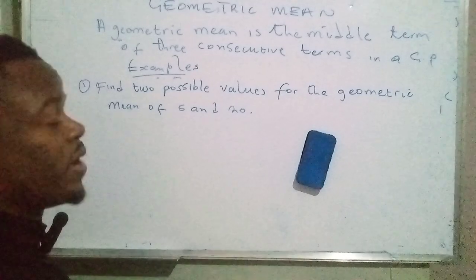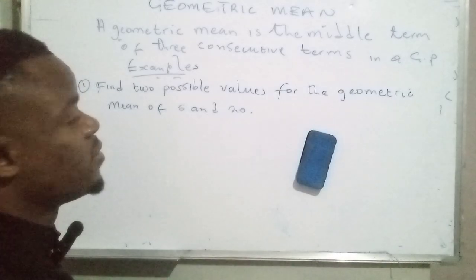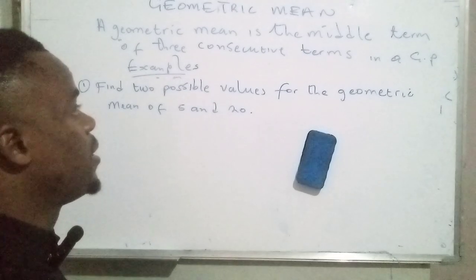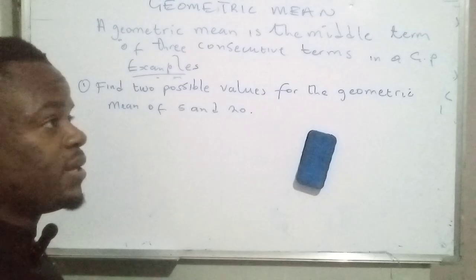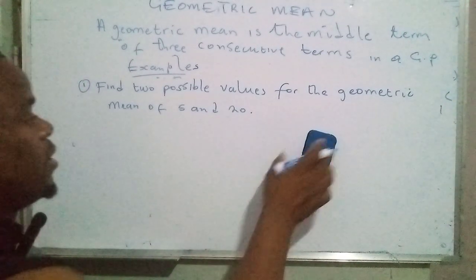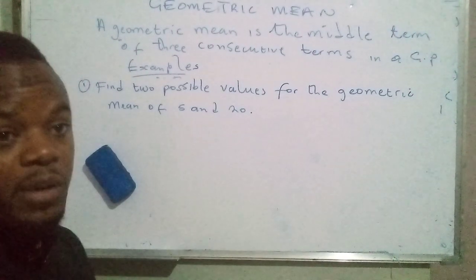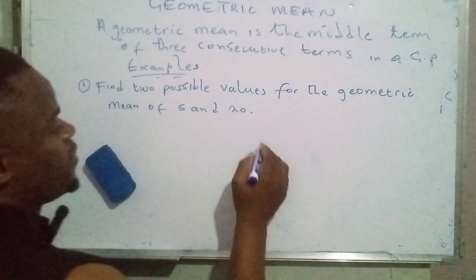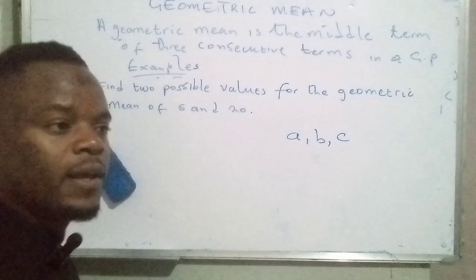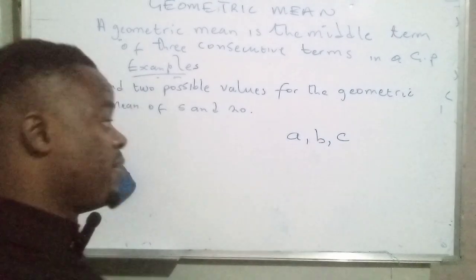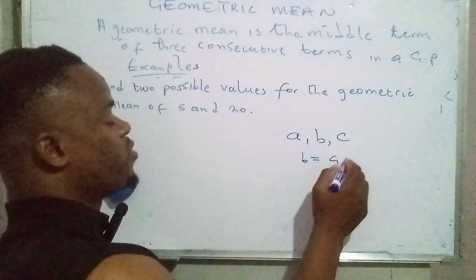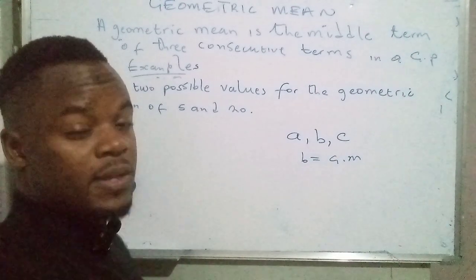In our lesson today our focus will be on the geometric mean. So what is the geometric mean? The geometric mean is simply a middle term within a geometric progression. Let's say we have three terms: A, B, and C. This term here in the middle is actually the geometric mean.